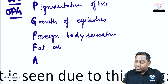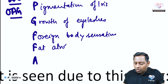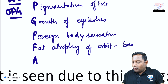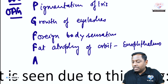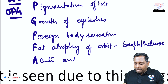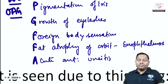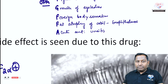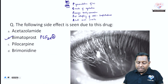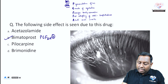Fat atrophy of the orbit is another side effect — if there is fat atrophy of the orbit, there will be enophthalmos, not exophthalmos. They can also lead to acute anterior uveitis. These are the common side effects associated with PGF2-alpha analog drugs.